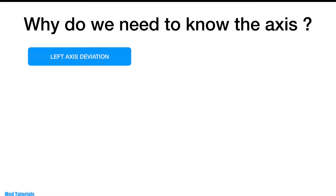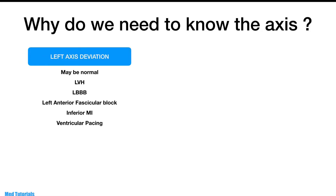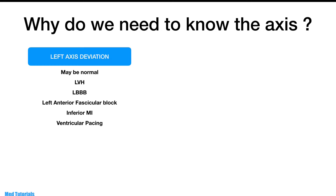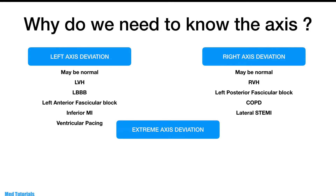If the ECG shows a left axis deviation, it may be normal, or it may be a clue to left ventricular hypertrophy, left bundle branch block, inferior MI, or ventricular pacing. If the ECG shows a right axis deviation, again it may be normal, but it could also be a pointer to right ventricular hypertrophy, left posterior fascicular block, COPD, or a lateral STEMI. Occasionally you may get an extreme axis deviation, which may be seen in severe right ventricular hypertrophy, sometimes in hyperkalemia or ventricular tachycardia.